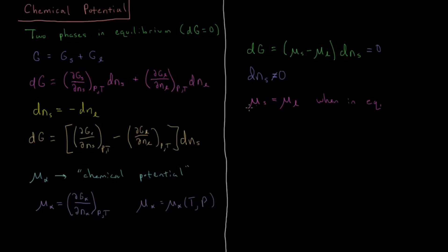Any two phases in equilibrium with one another must have equal chemical potentials. You can think of chemical potential as the energy a particle wants to roll downhill — just like a ball wants to lower its gravitational potential, a particle wants to lower its chemical potential. If it can change phases and lower its chemical potential, it will do so. Electricity flows from high to low potential, and particles will flow from high to low chemical potential.